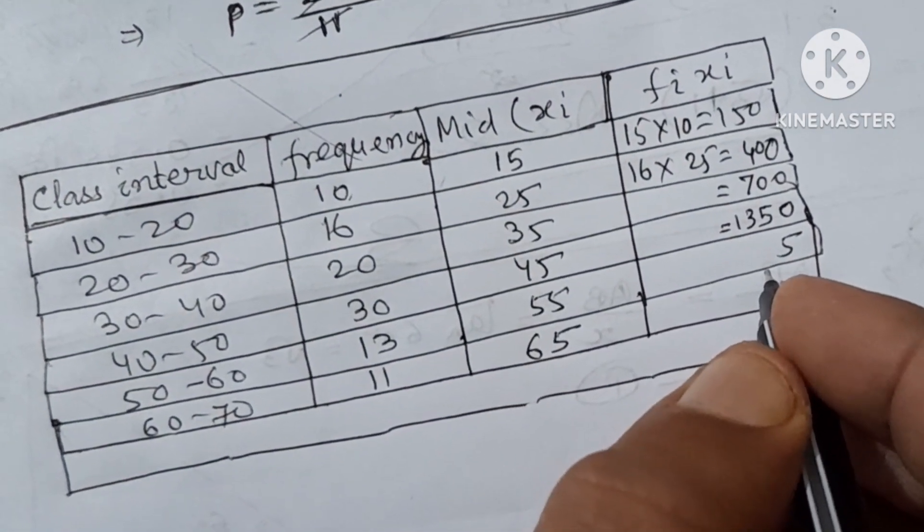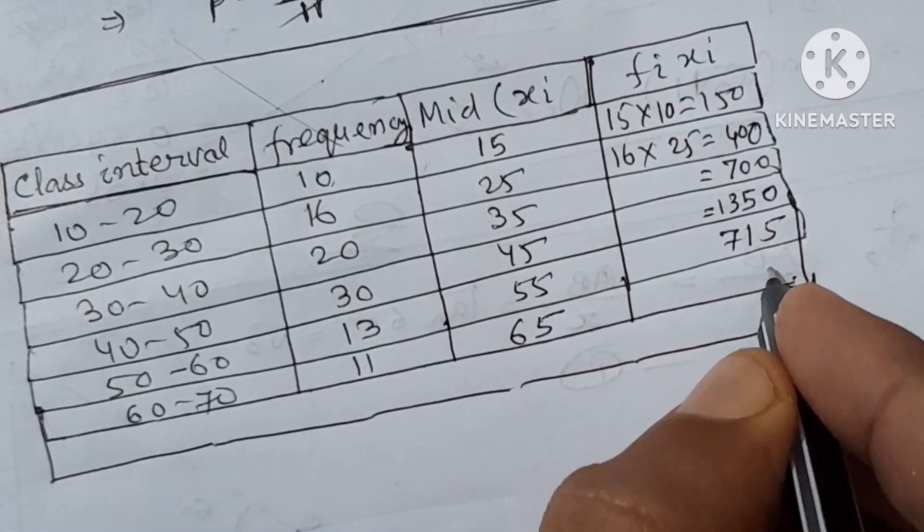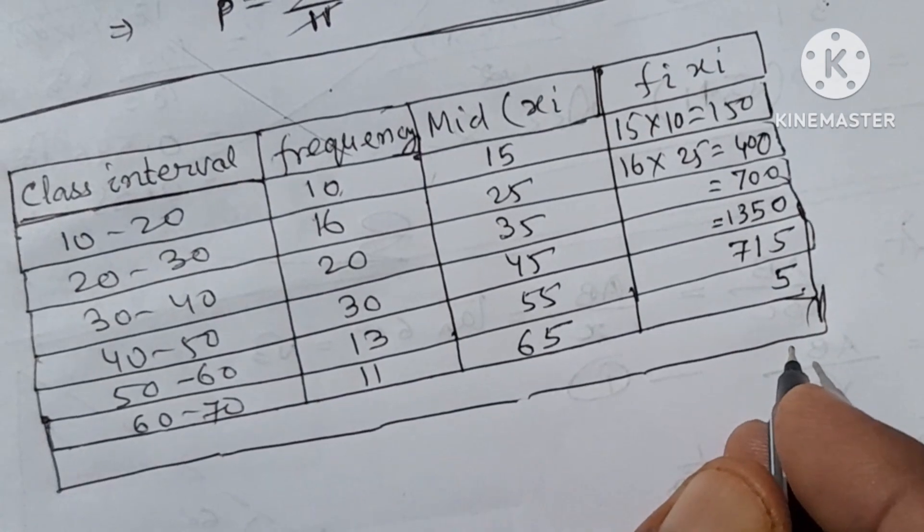Next, 13 into 55 is, I'm multiplying it orally, it's 715. Next is again 715.